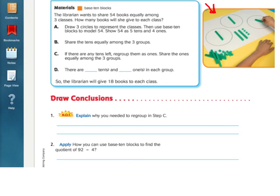So here's our problem. The librarian wants to share 54 books equally among three classes. How many books will she give to each class? So that's our problem, 54 divided by 3.